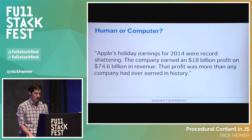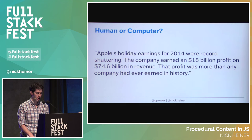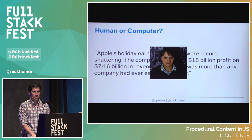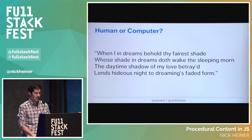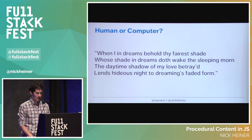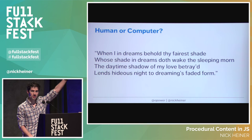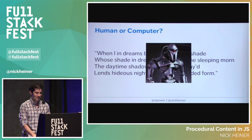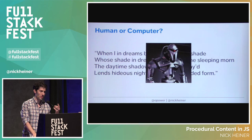Next example: 'Apple's holiday earnings for 2014 were record-shattering. The company earned an $18 billion profit on $74.6 billion in revenue. That profit was more than any company had ever earned in history.' That one is a human. Last one: 'When I in dreams behold thy fairest shade, whose shade in dreams doth wake the sleeping morn, the daytime shadow of my love betrayed lends hideous night to dreaming's faded form.' The room was about split — it is a computer. This is one I got wrong.